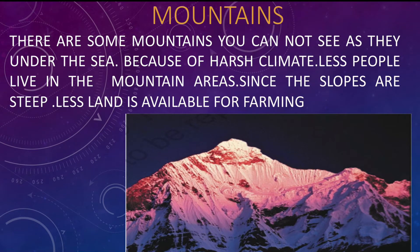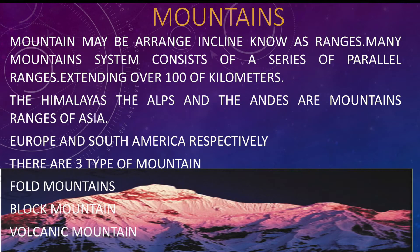There are some mountains you cannot see as they are under the sea. Because of harsh climate, most people do not live in mountain areas since the slopes are steep and less land is available for farming. Mountains may be arranged in lines known as ranges. Many mountain systems consist of a series of parallel ranges extending over 100 kilometers. The Himalayas, the Alps, and the Andes are mountain ranges of Asia, Europe, and South America respectively.